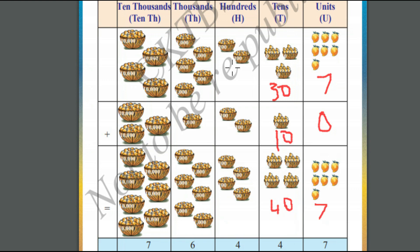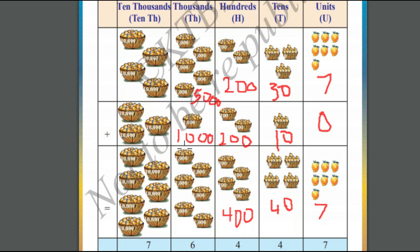Now let us move on to hundreds place. In hundreds place, the first number has 200 mangoes and the second number has 200 mangoes. So 200 plus 200 is equal to 400. Now let us move on to thousands place. In the first number we have got 5,000 mangoes; in the second number we have got 1,000 mangoes. So 5,000 plus 1,000 is equal to 6,000. Finally, in the ten-thousands place, the first number has 40,000 mangoes and the second number has 30,000 mangoes. 40,000 plus 30,000 is equal to 70,000.